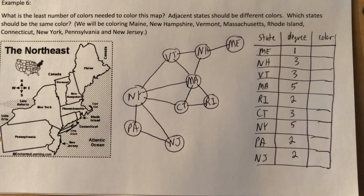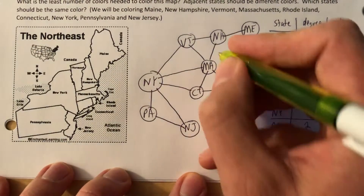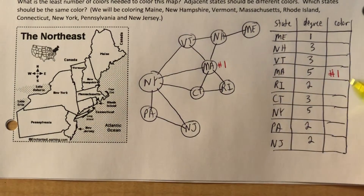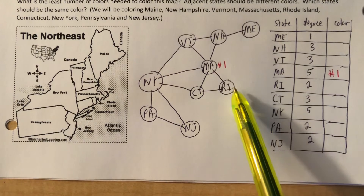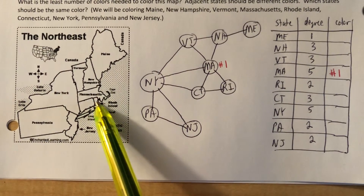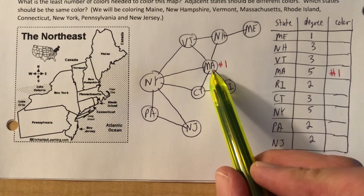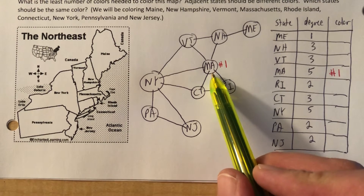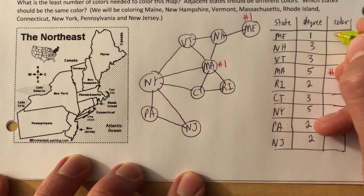I'm going to pick Massachusetts — I've never really been there. Let's call that color number one. I'm going to decide who can be the same color as Massachusetts. Rhode Island, Connecticut, New York, Vermont, and New Hampshire cannot be color one. But I can choose states not adjacent to Massachusetts. Massachusetts can be the same color as Maine — Maine is not connected. So Maine is also color number one. And Pennsylvania can also be color number one.